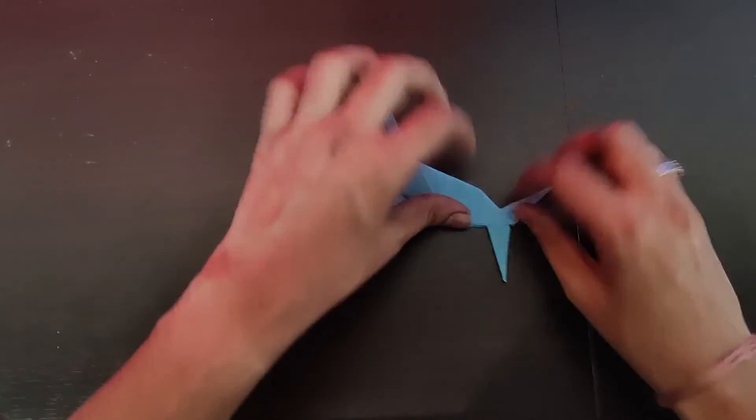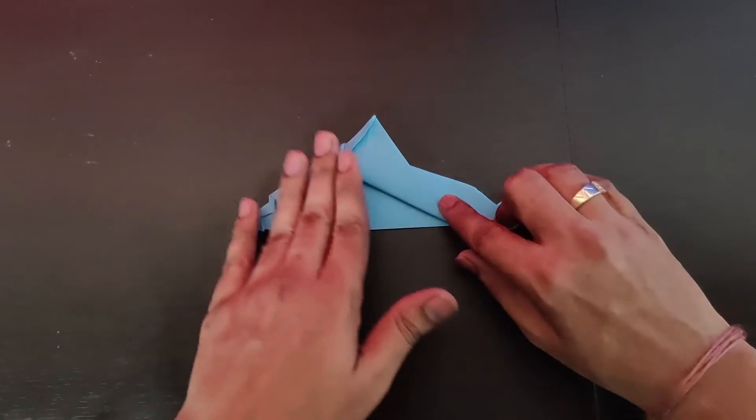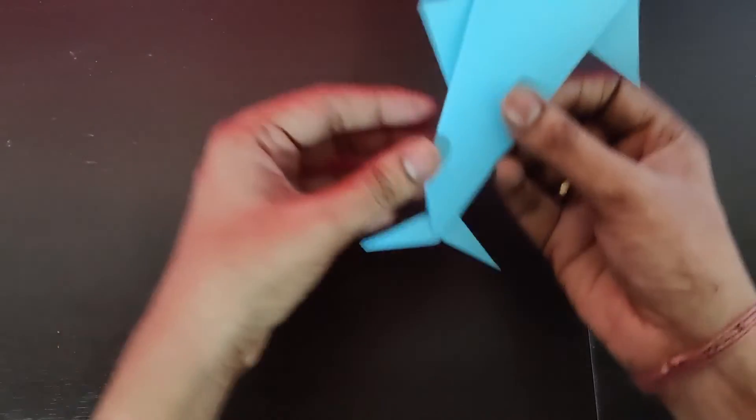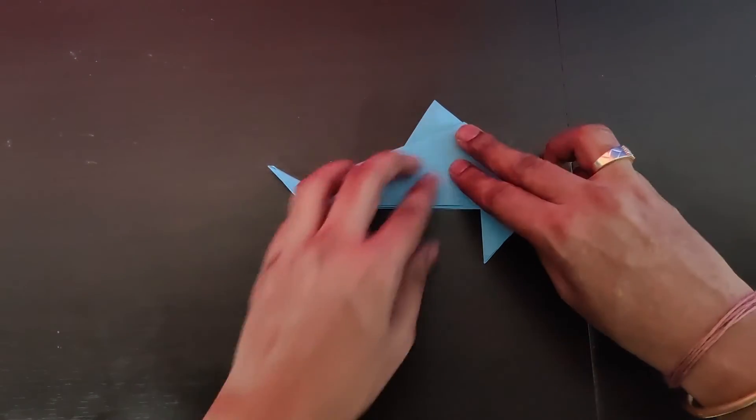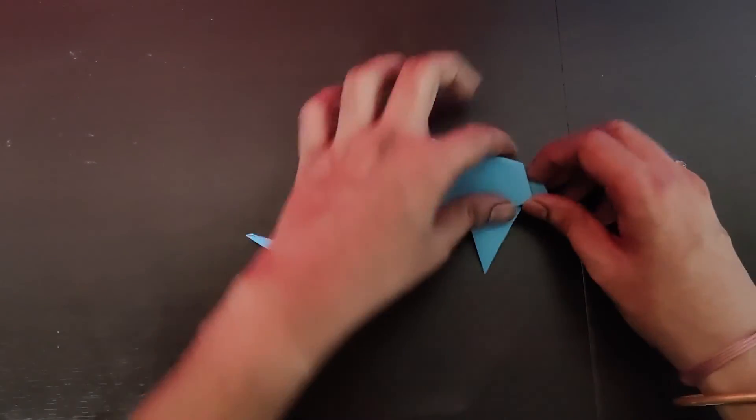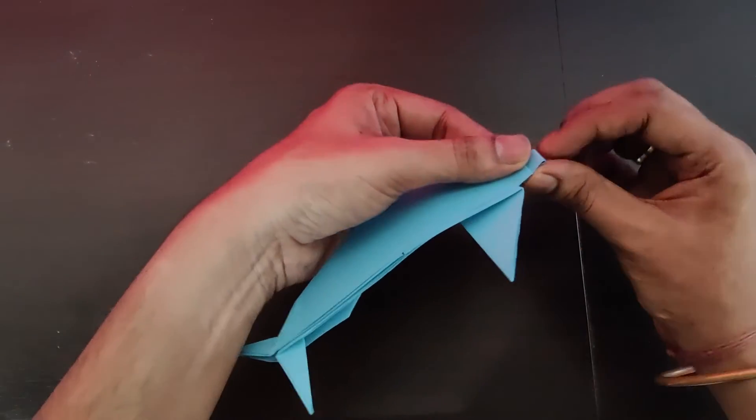Like this, pull it backwards. Press it tightly, and that's it. This is your dolphin model which looks really beautiful. This is your origami dolphin model. Oh wait, let's do it properly.